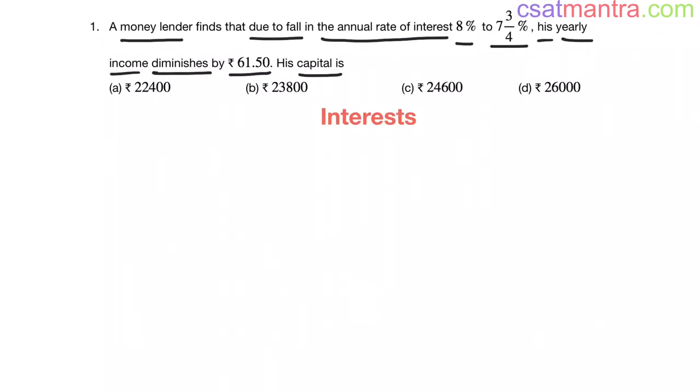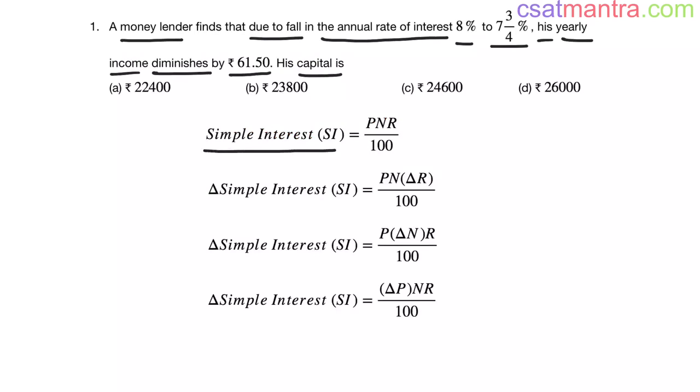Very simple question from interest chapter based on simple interest concept. We know simple interest SI is equal to PNR by 100.